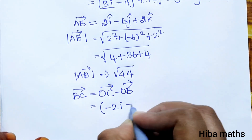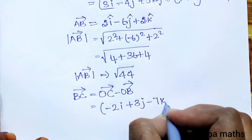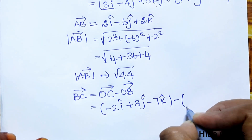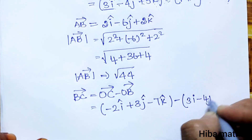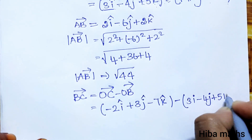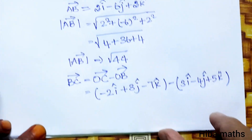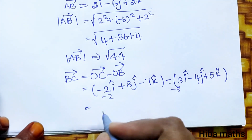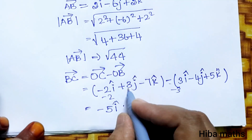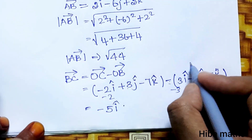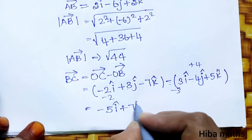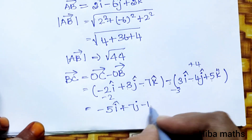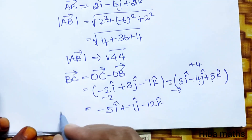Next, BC vector equals OC minus OB. OC is given as minus 2i plus 3j minus 7k, and OB is 3i minus 4j plus 5k. So BC equals minus 2 minus 3 = minus 5i, plus 3 minus minus 4 = plus 7j, and minus 7 minus 5 = minus 12k. So BC vector is minus 5i plus 7j minus 12k.